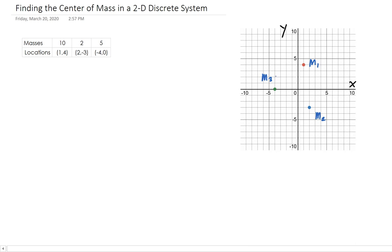The goal is to locate the equilibrium point — in other words, where is the point that makes the system in balance, or what we call in equilibrium? You can think of this as a piece of paper with various mass points on it, and you want to find out where the balance point is — where is the fulcrum we need to find to make this system in equilibrium?